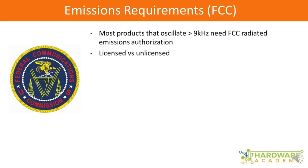There are two types of products in the eyes of emissions requirements: licensed and unlicensed products. For instance, police radios or ham operators are licensed products, because you have to have a license to be a ham operator or to transmit on a police radio. Those are examples of licensed products, but for most products we're going to be talking about in this course, they're going to be unlicensed.